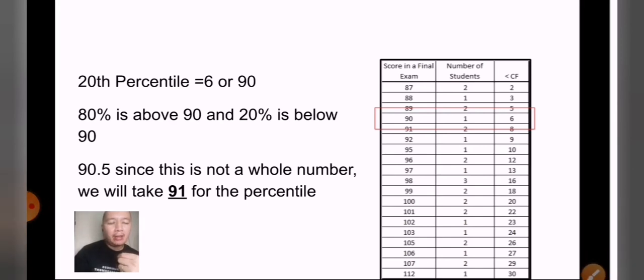Now, for step three, since we already have the observation which is 6, and then the rule is that L plus 1, you will have 6 plus 7. So 6 is 90 while 7 is 91, because the border of the less than cumulative frequency is 6, and then 7 already belongs to the fifth row, it already belongs to less than cumulative frequency 8. That's why the score is 91. So we will add 90 plus 91 divided by 2, which gives us an answer of 90.5. Now, since 90.5 is not a whole number, we will take 91 for the percentile, and that's the second rule for step number three.